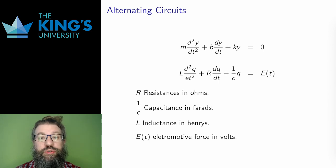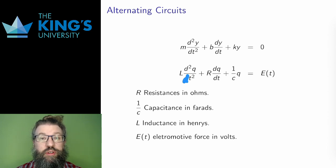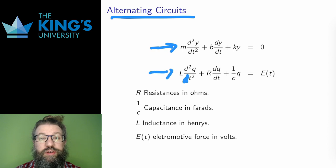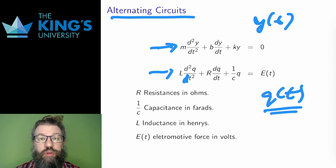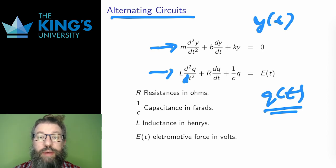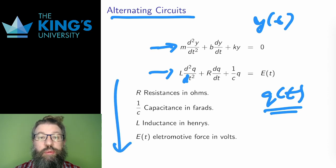Before moving on to actual solution techniques, I want to talk about the second major interpretation of these SOCCLDEs: alternating current circuits. The DE that describes alternating currents is exactly the same as that for harmonic motion, but the interpretation of each of the coefficients is quite different. Instead of a position function that describes the system, a charge function is the function in question. The movement of that charge will be the alternating current. In this system, there are four components to a circuit: resistors, capacitors, inductors, and an external electromotive force.